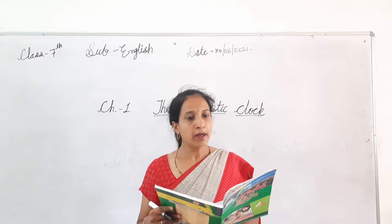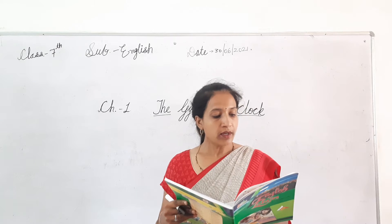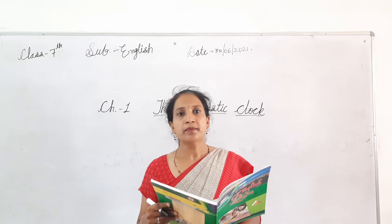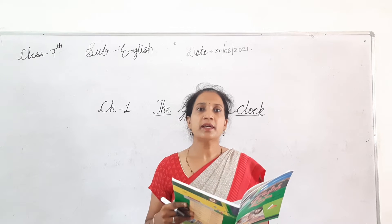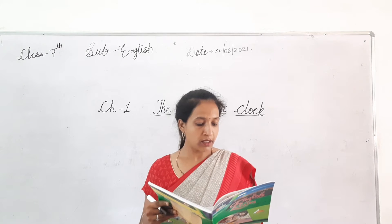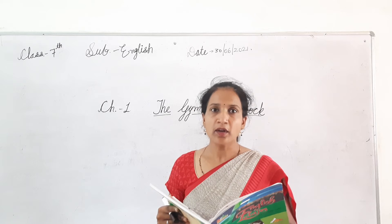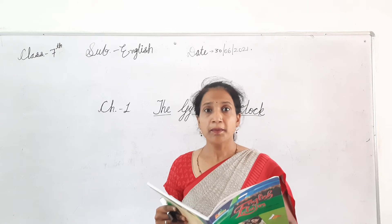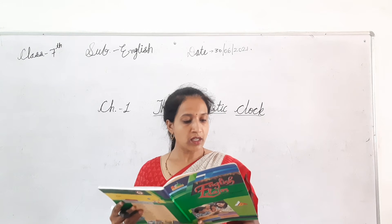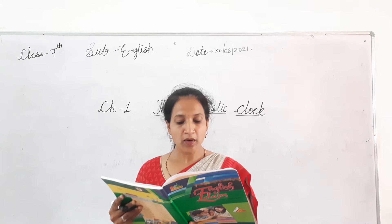The first question is: what is the relationship between the clock and the poet? The answer to the first question is: they are friends. The poet and the clock — dono kya hai — mitra hai — both are friends. Now the second question is: what is the language which the clock reminds the poet of — what to do?